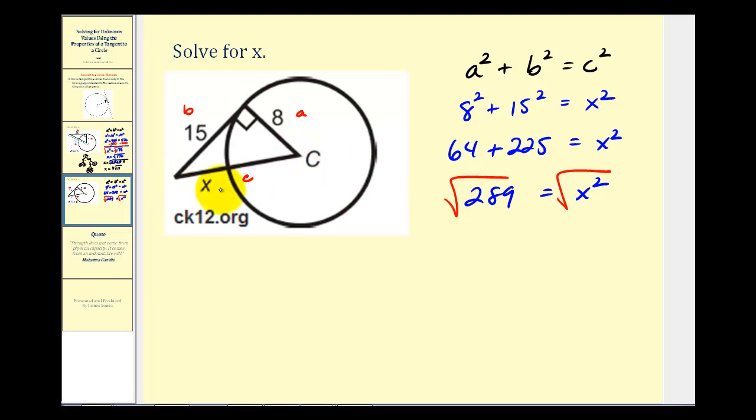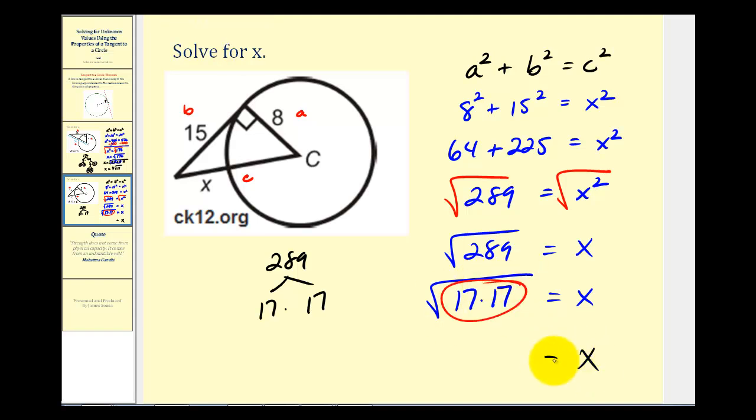And because it's a length on a triangle, we're only going to consider the principal or positive square root. So we have X equals the square root of 289. And actually, 289 is a perfect square. It might not be easy to recognize, but 289 is equal to 17 times 17. So this simplifies nicely. X is equal to 17 units.